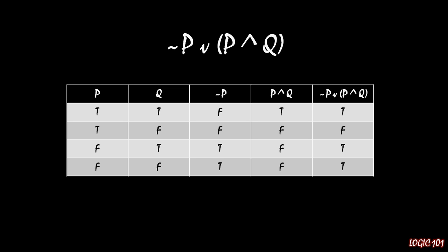And in the bottom two rows, we see that not P is true, and so that fulfills the disjunction, and we have true for both of those rows. And that is a simple application of a truth table,